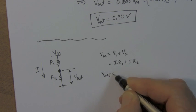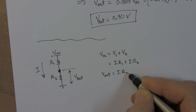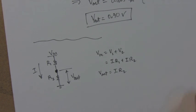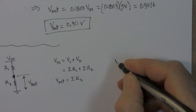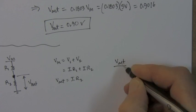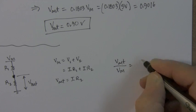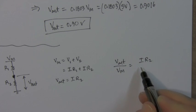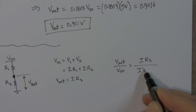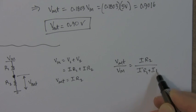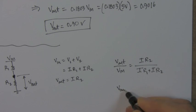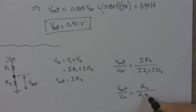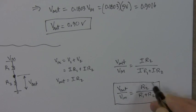VOUT is I times R2. All we have to do now is take the ratio of these. VOUT divided by VIN is equal to I times R2 divided by I times R1 plus I times R2. The I's cancel. VOUT over VIN equals R2 over R1 plus R2. And that's it.